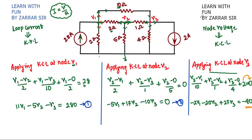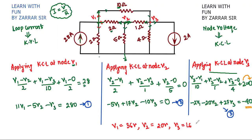If you solve all three equations using a calculator or Cramer's Rule — where you apply determinants — you get the final values: v1 = 36 volts, v2 = 20 volts, and v3 = 16 volts. The examiner may also ask for the voltage across the 1-ohm resistor, which is simply v2 minus v3 or v3 minus v2 depending on polarity. This concludes the KCL nodal analysis section.